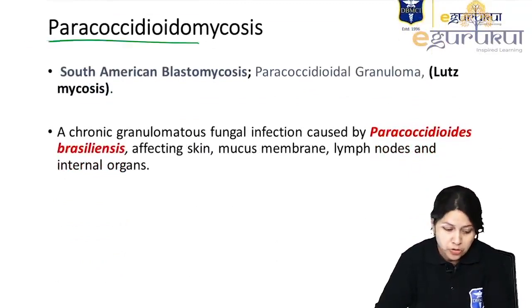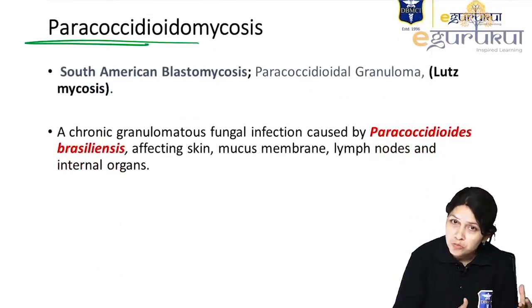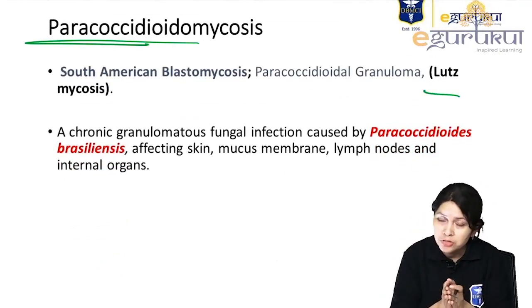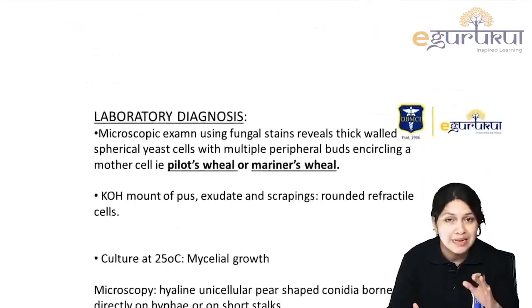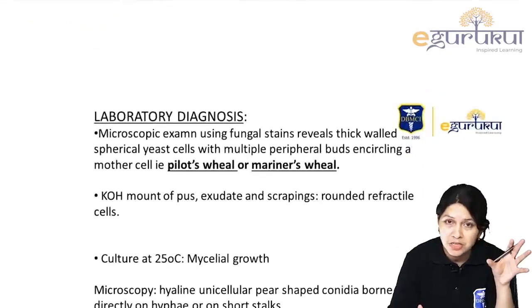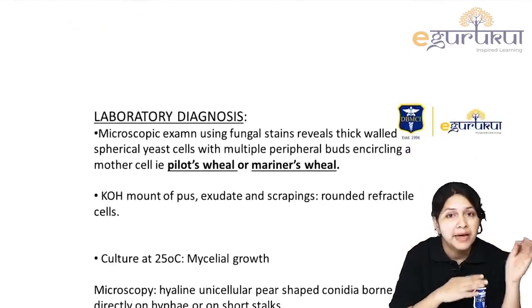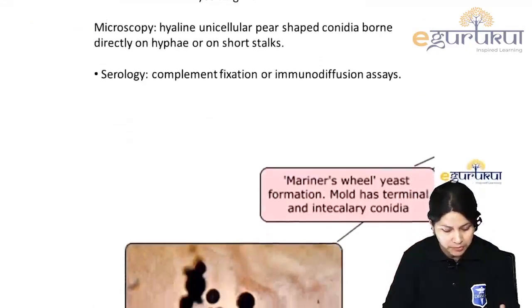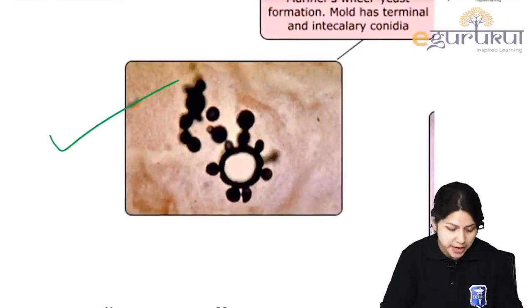Paracoccidioidomycosis is caused by Paracoccidioides brasiliensis and is the agent for South American blastomycosis or Lutz disease. The typical yeast feature is a mother cell with multiple daughter cells — the mariner's or sailor's wheel appearance — which catches the diagnosis for Paracoccidioides.